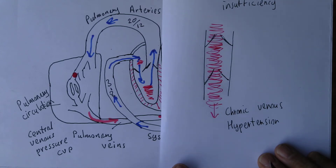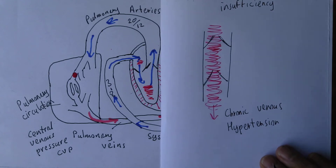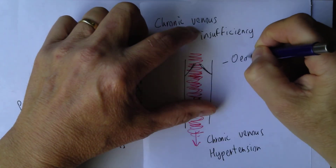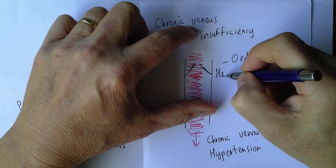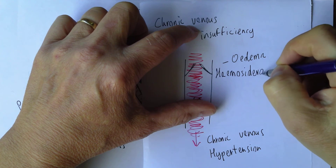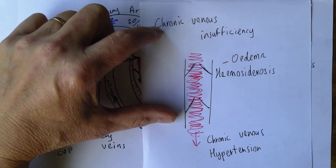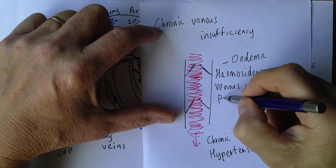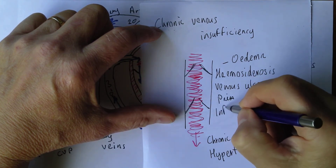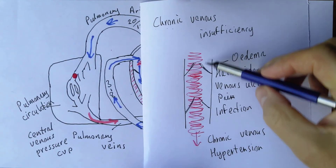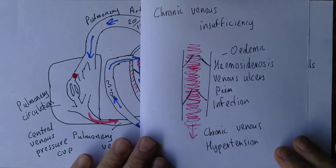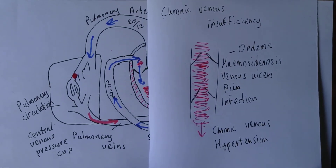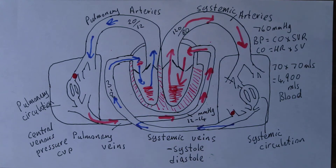Chronic venous insufficiency most commonly affects the veins in the legs, though it can affect the arms as well. This gives us clinical features such as edema and brown staining — hemosiderosis. It can lead to venous ulcers, which are painful, and it can also lead to infection. Venous congestion is painful anyway, especially after exercise, because the limb becomes over-engorged with blood, causing a backlog of blood particularly into the legs.